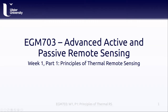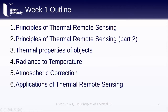Hello and welcome to Week 1, Part 1 of EGM 703, Principles of Thermal Remote Sensing. In this lesson, we'll cover the basics of electromagnetic radiation, the main tool we use to gather information in thermal remote sensing. In the rest of the lessons for this week, we'll cover more principles of thermal remote sensing, thermal properties of objects, how to convert radiance to temperature, atmospheric correction, and applications of thermal remote sensing.